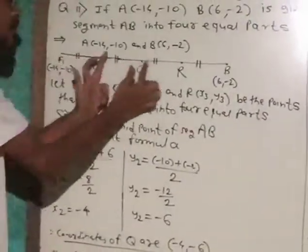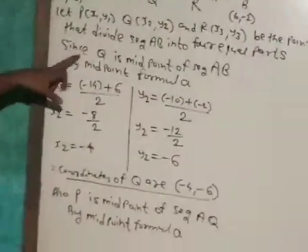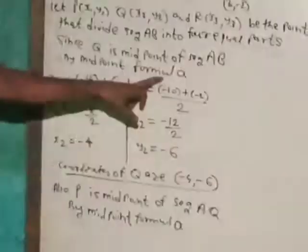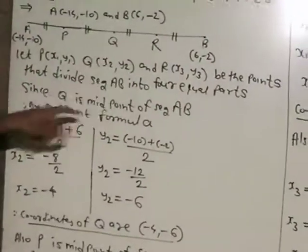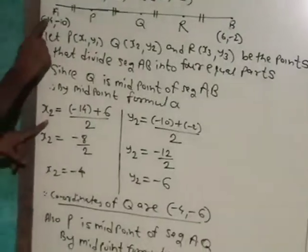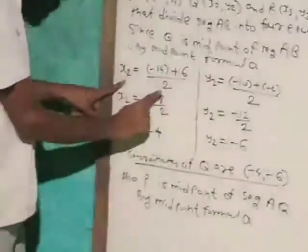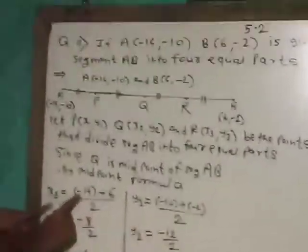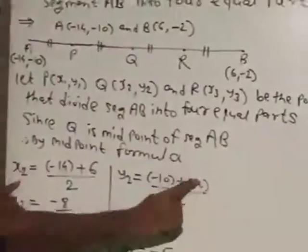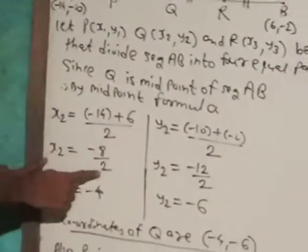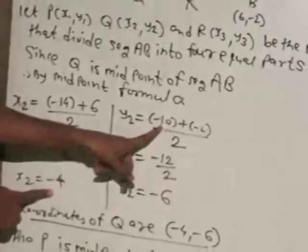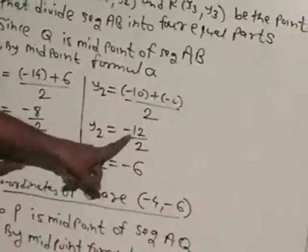Since Q divides the segment into 2 equal parts on each side, Q is the midpoint of segment AB. By the midpoint formula, coordinates of Q are: x₂ = (-14 + 6)/2 = -8/2 = -4, and y₂ = (-10 + (-2))/2 = -12/2 = -6.